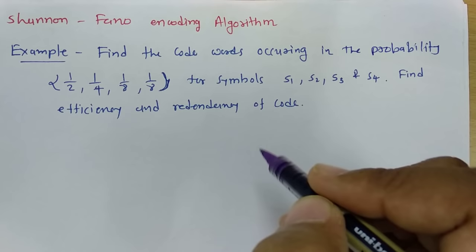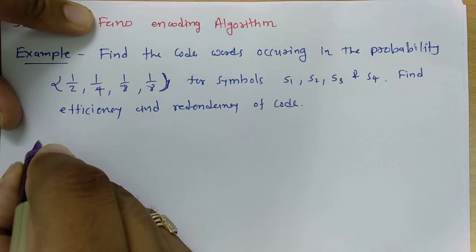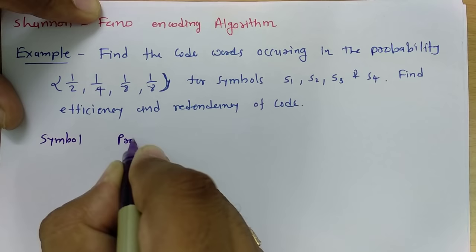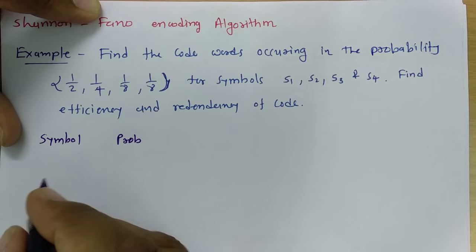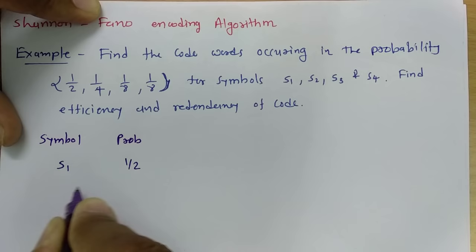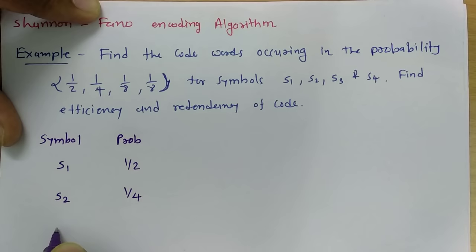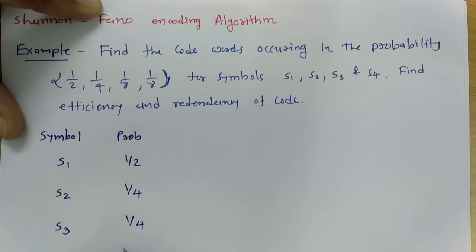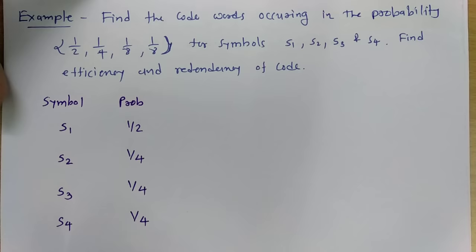First step: arrange symbols with their probabilities in descending order. The highest probability is 1/2, which belongs to symbol S1. So we list S1 with probability 1/2 first, then S2 with probability 1/4, then S3 with probability 1/4, and S4 with probability 1/4.